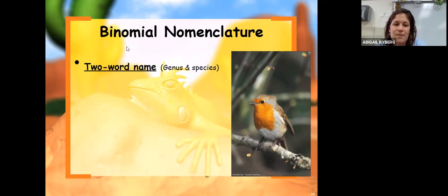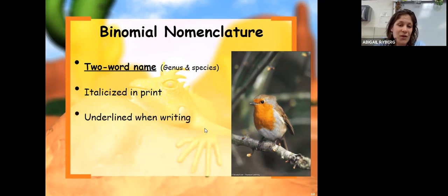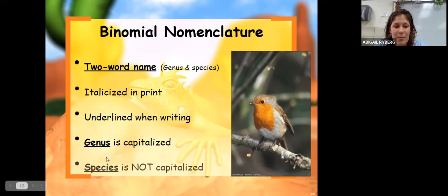Binomial nomenclature is the naming system. Every organism has been given a scientific name, and that system is called binomial nomenclature. It's a two-word system where every organism gets a two-word name. The first one is their genus and the second one is their species. It is italicized in print and underlined when you're writing it. The genus is capitalized but the species is not.